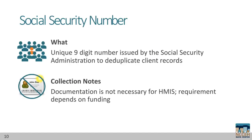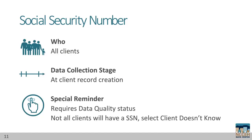Social Security number refers to the nine-digit unique number issued by the Social Security Administration, and is used to deduplicate client records. Documentation is not necessary for HMIS, though some funding sources may require documentation for eligibility. All clients need to be asked about their Social Security numbers, and this element is part of the HMIS profile in the record creation stage. Social Security numbers also require a data quality status to know if the number is partial, and missing or inaccurate Socials, like zeros, will cause errors in reporting.